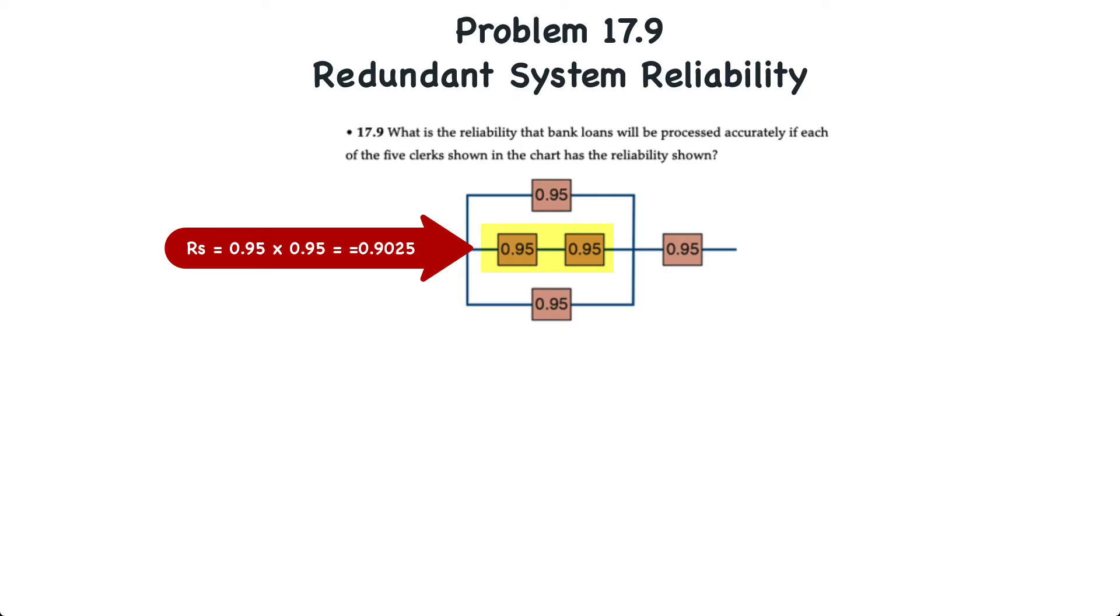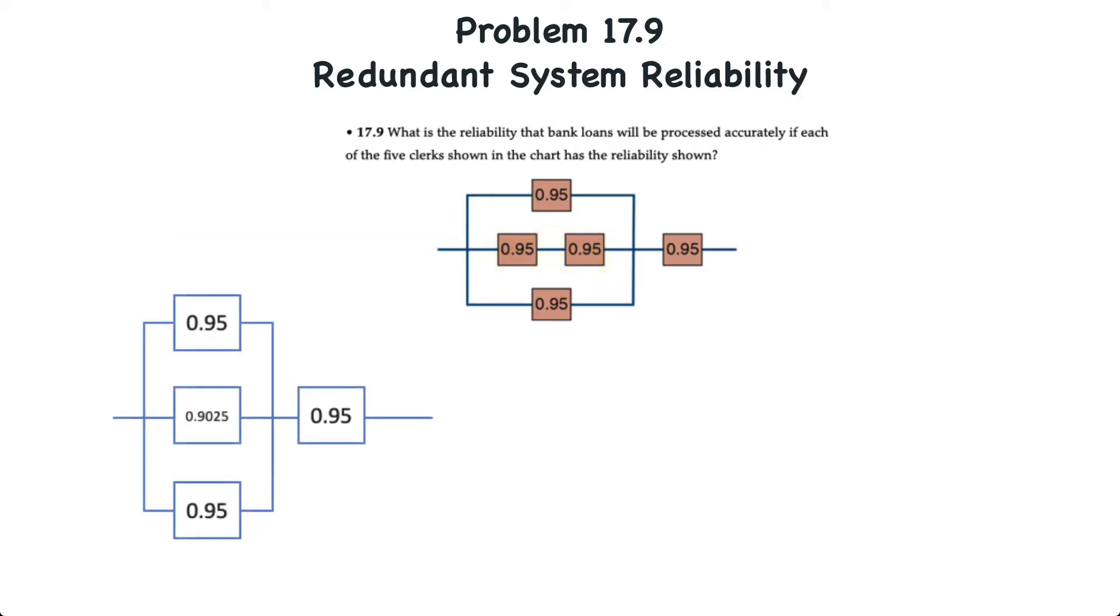So, if we take 0.95 times 0.95, that will result in a series reliability of those two clerks of 0.9025, or 90.25%.